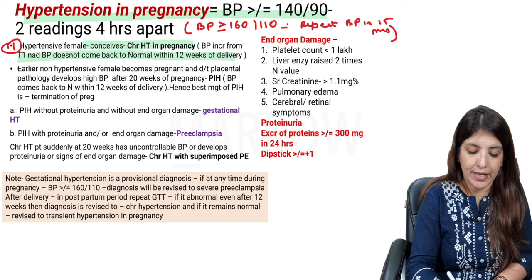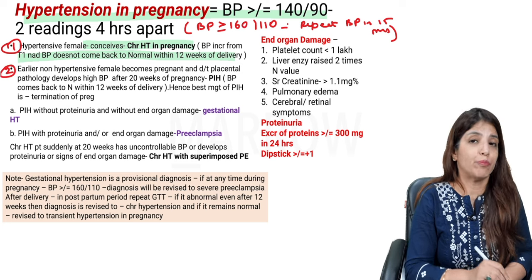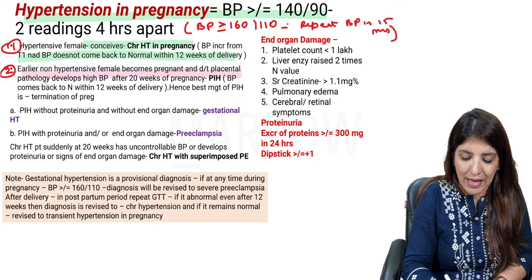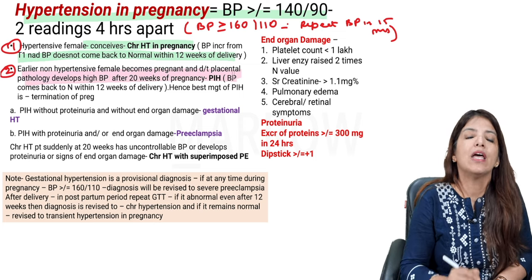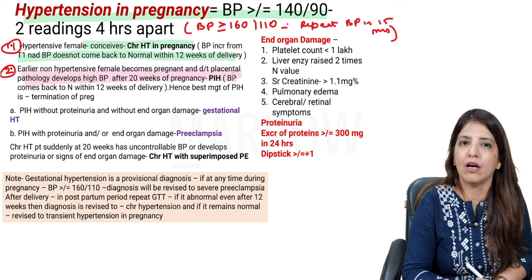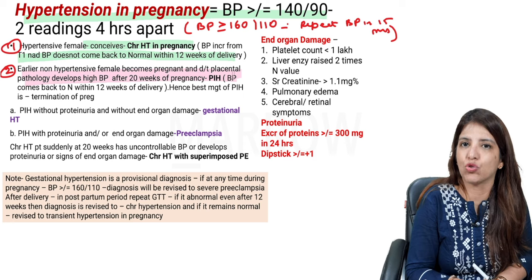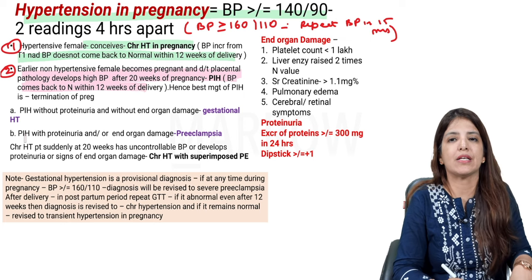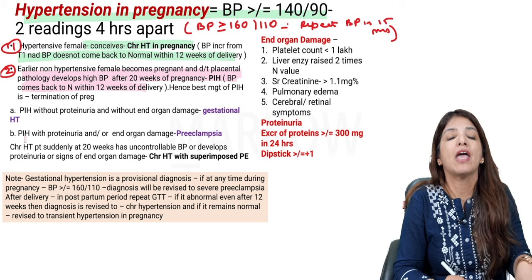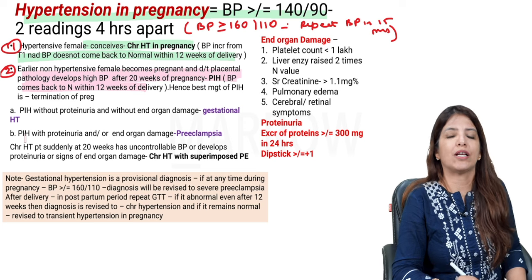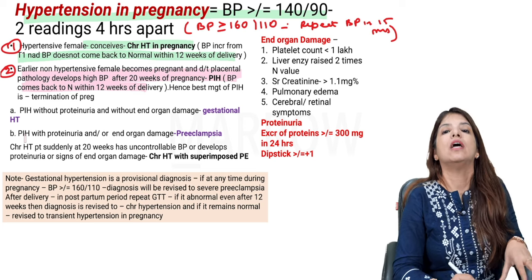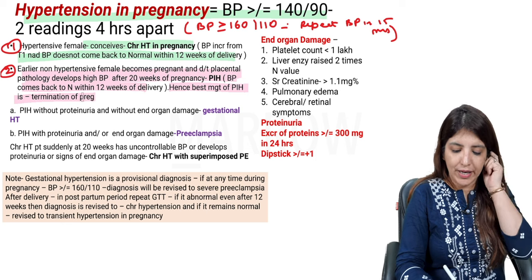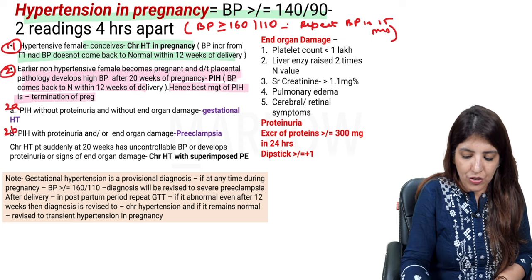Number two: a female who was not hypertensive before pregnancy — her BP was normal — but during pregnancy, due to some placental pathology, her BP increases after 20 weeks of pregnancy, and BP comes back to normal within 12 weeks of delivery. This is called pregnancy-induced hypertension (PIH). Because the increase in BP is due to placental problems, the best management of PIH is termination of pregnancy.